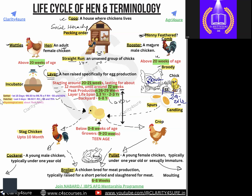Another term seen in examinations is physiological zero. Physiological zero is the temperature at which embryonic development does not take place. If the temperature falls below a certain mark, the eggs will not hatch and the embryo inside will not develop. That temperature — the physiological zero — is 75 degrees Fahrenheit or 24 degrees Celsius. This is very, very important.